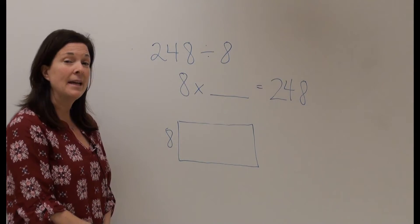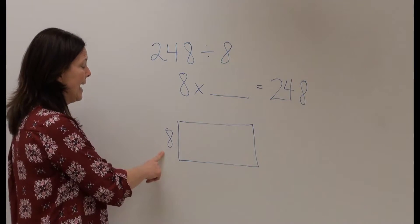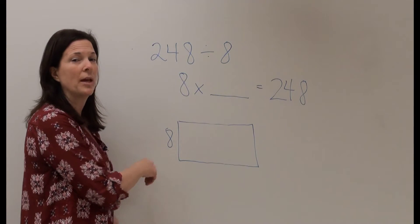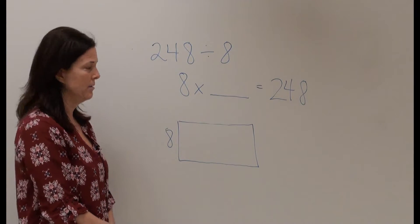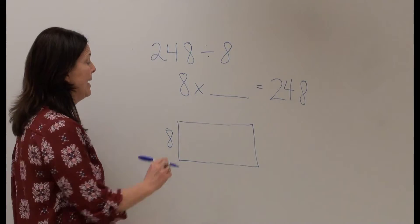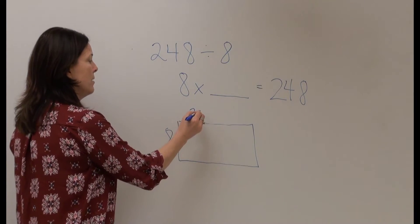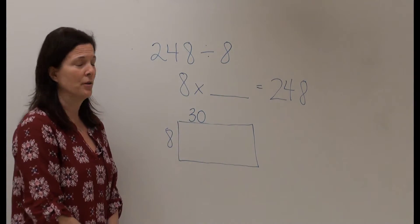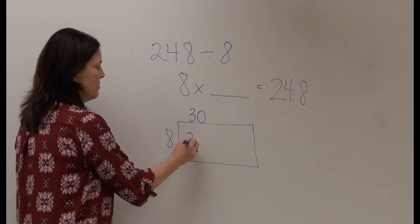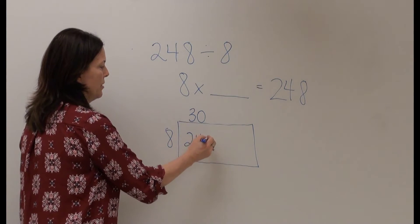So I'm going to begin by asking myself 8 times what factor will get me close to 248 and I know that 8 times 30 will give me 240. So 30 times 8 will be 240 students.